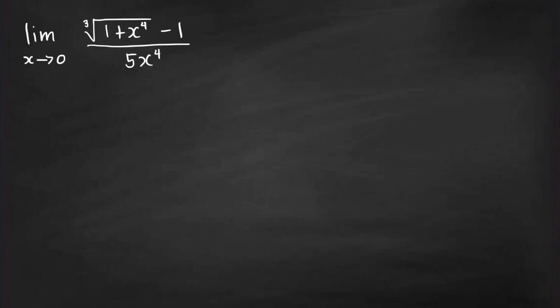Consider this first limit problem. As x goes to 0, our numerator goes to 0 as well as our denominator. So this limit has the indeterminate form 0 over 0. If you know the technique that I have in mind, you can easily tell the limit of this function. And the limit is equal to 1 over 15.